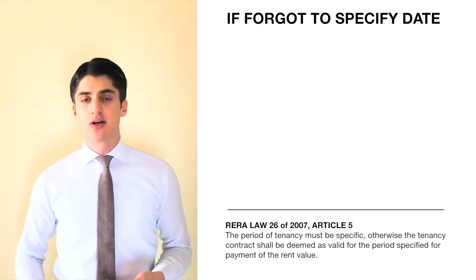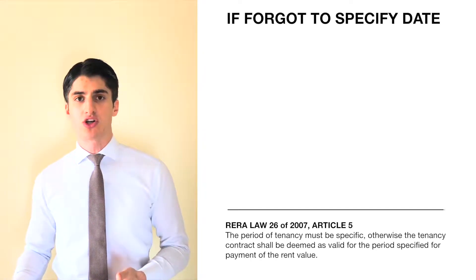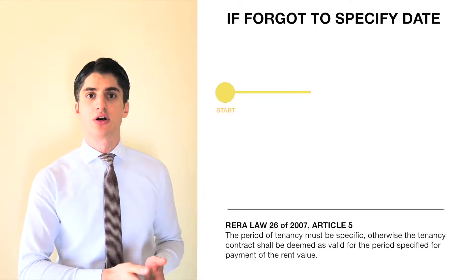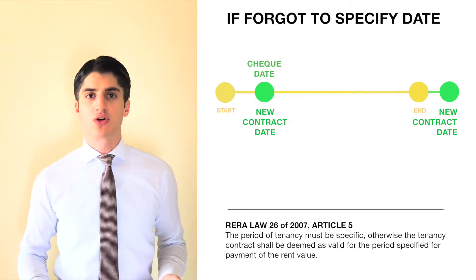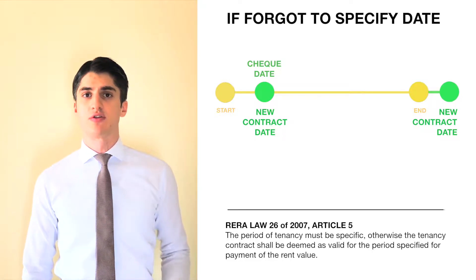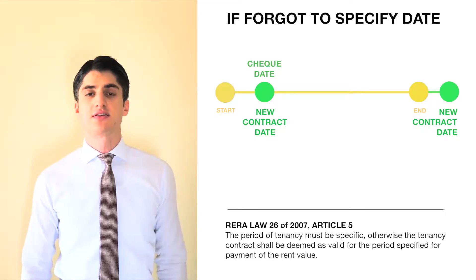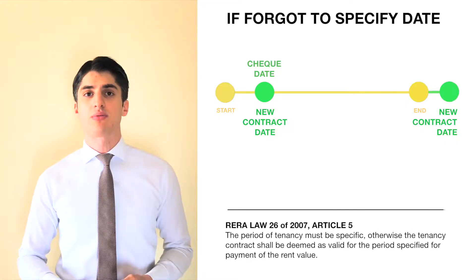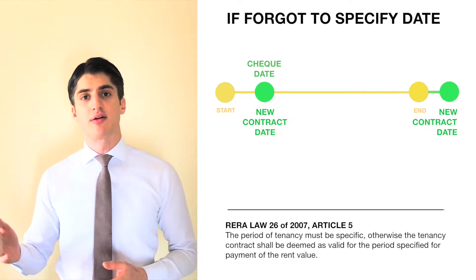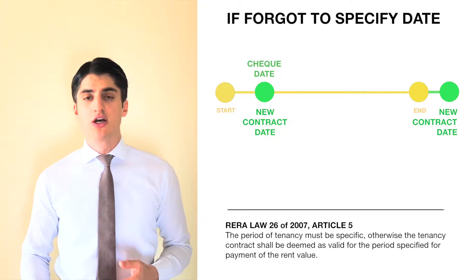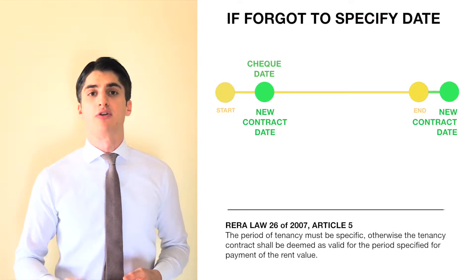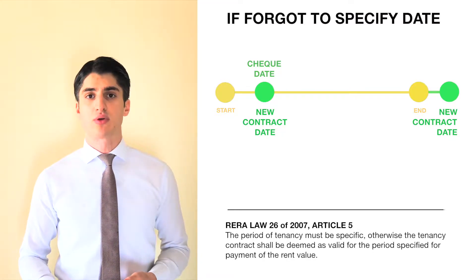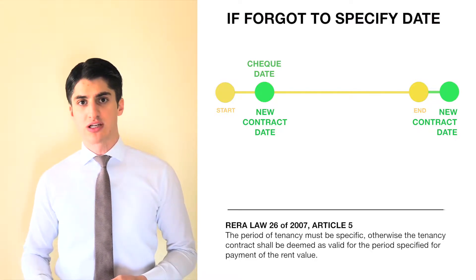In this case, RERA will take all your checks — or let's say you made a payment in one check — and starting from the date of that check, this will be the contract starting date. There is a law which regulates this: Law 26 of 2007, and Article 5 says that the term of the lease contract must be specified. In case the term is not specified or it's impossible to prove, then the contract will be valid for the period of the rent payment.